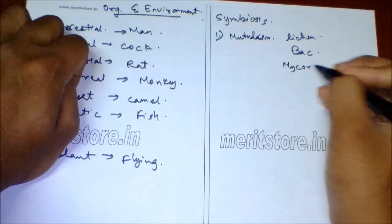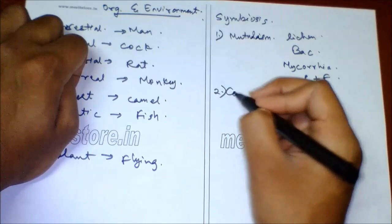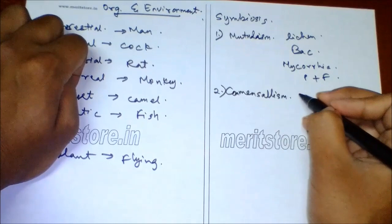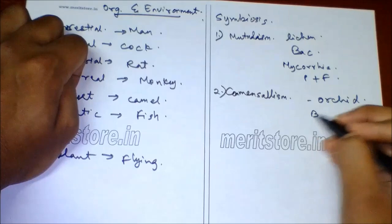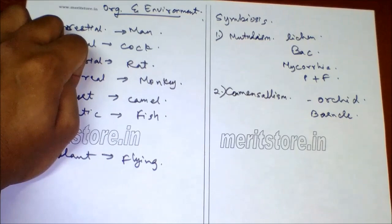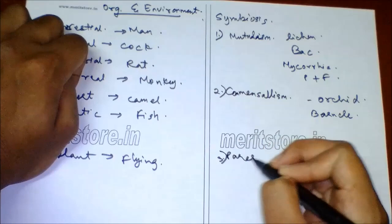The second one is commensalism. Examples include orchid living on a tree, or barnacles at the back of whales. In commensalism, one organism is benefited and the other is neither benefited nor harmed. The third one is parasitism, in which one organism is benefited and the other is harmed, which is known as the host.